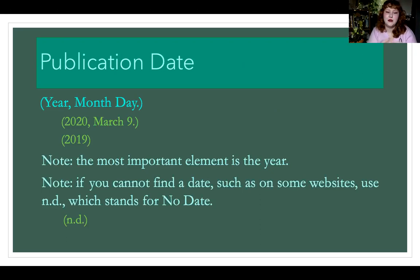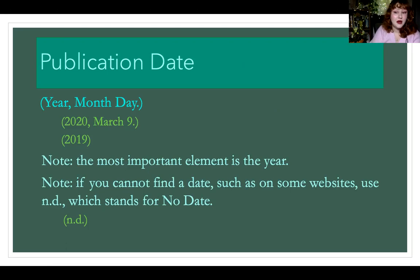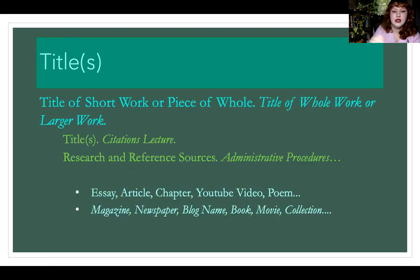Publication date: the most important element is the year. If you can't find the date — which is typical on websites — then use 'ND' for no date. For a book, the date should be there; if you can't find it, let me know because your book might be one without a cover page. But otherwise, there should be at minimum a year available for you to list.